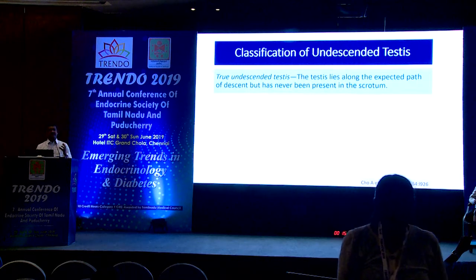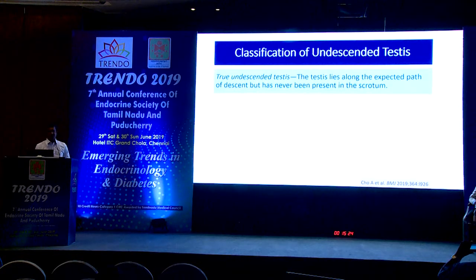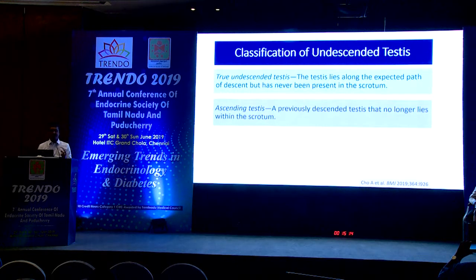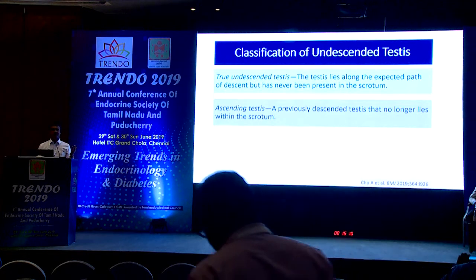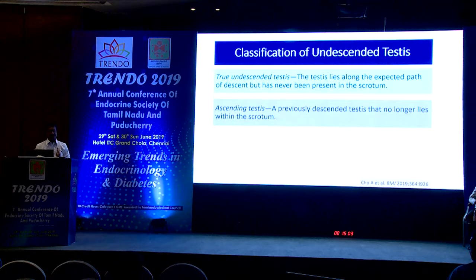An important consideration is differentiating true undescended testis from its mimics. One mimic is the ascending testis — a testis that was previously in the base of the scrotum at some point in life but has since ascended back. This should ideally be called an ascending testis rather than a true undescended testis.